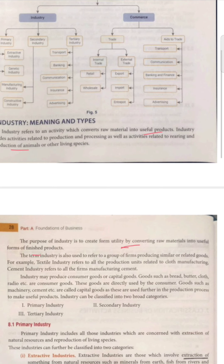The term industry is also used to refer to a group of firms. For example, textile industry means cloth manufacturing, and cement industry means manufacturing of cement.